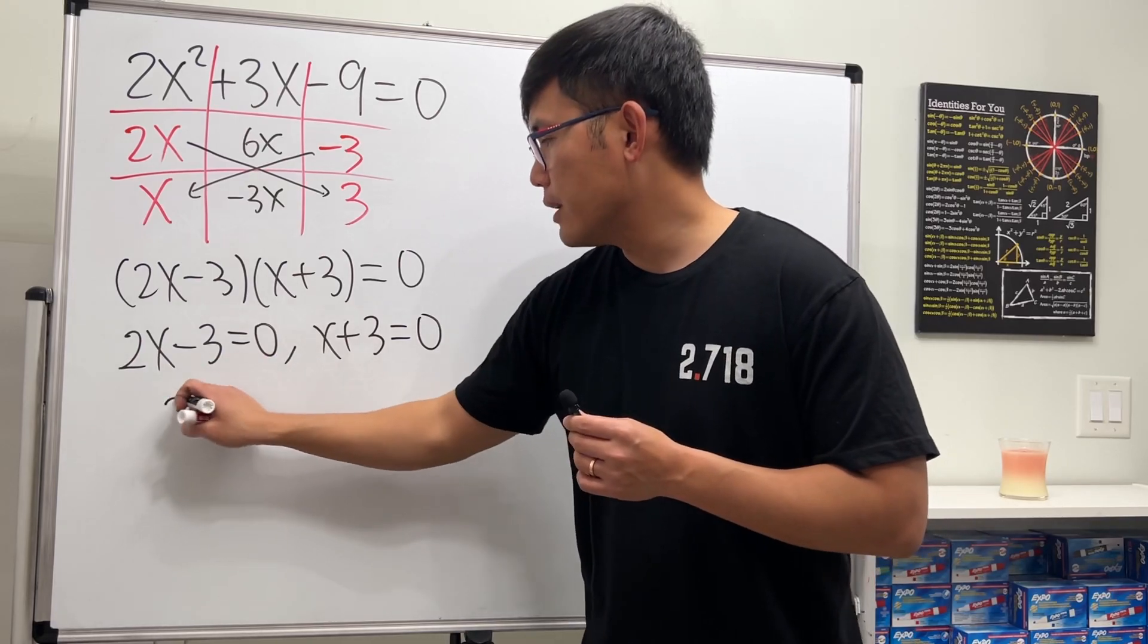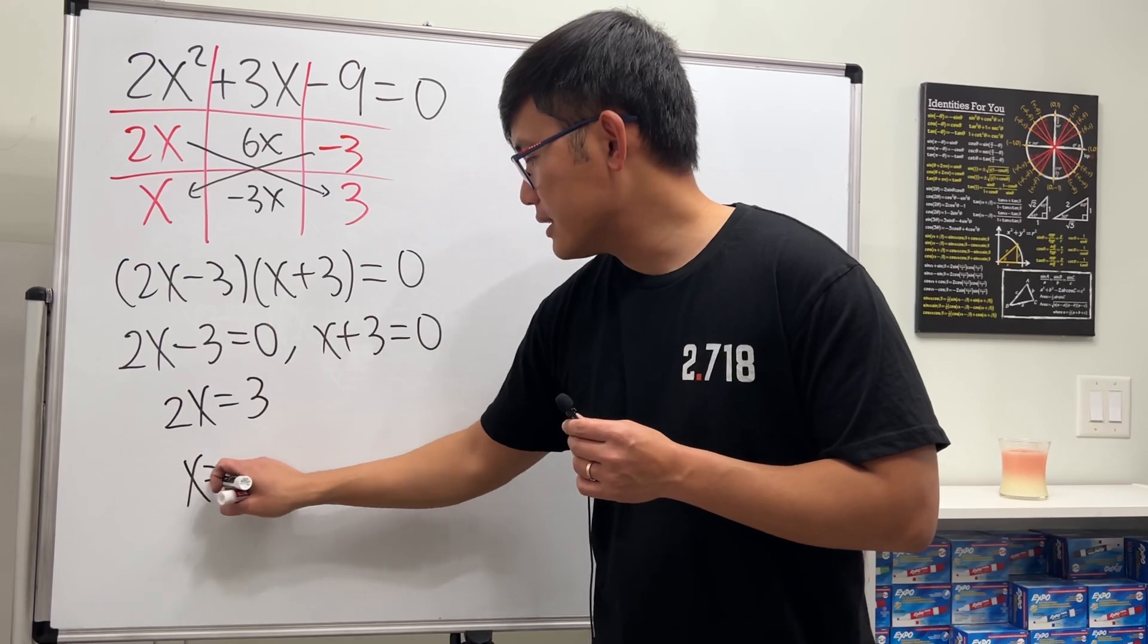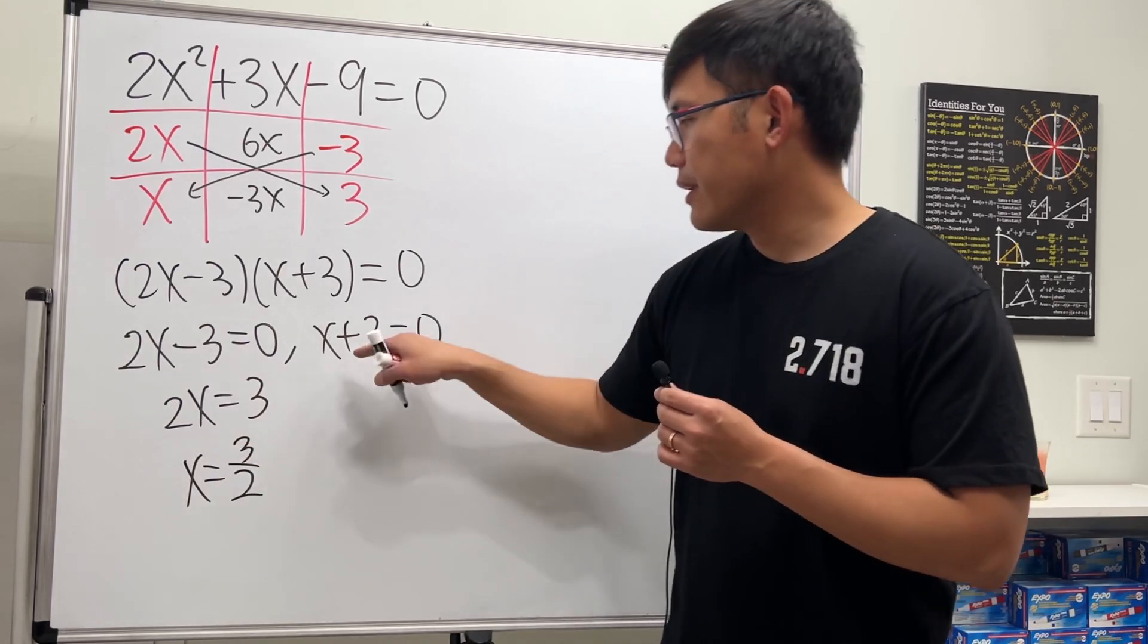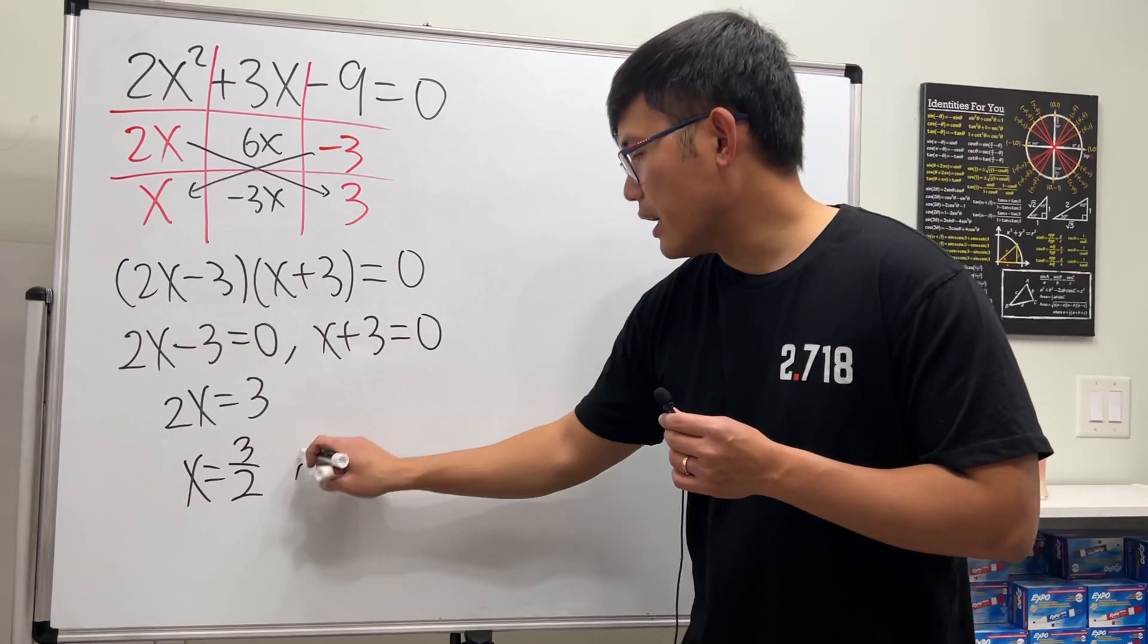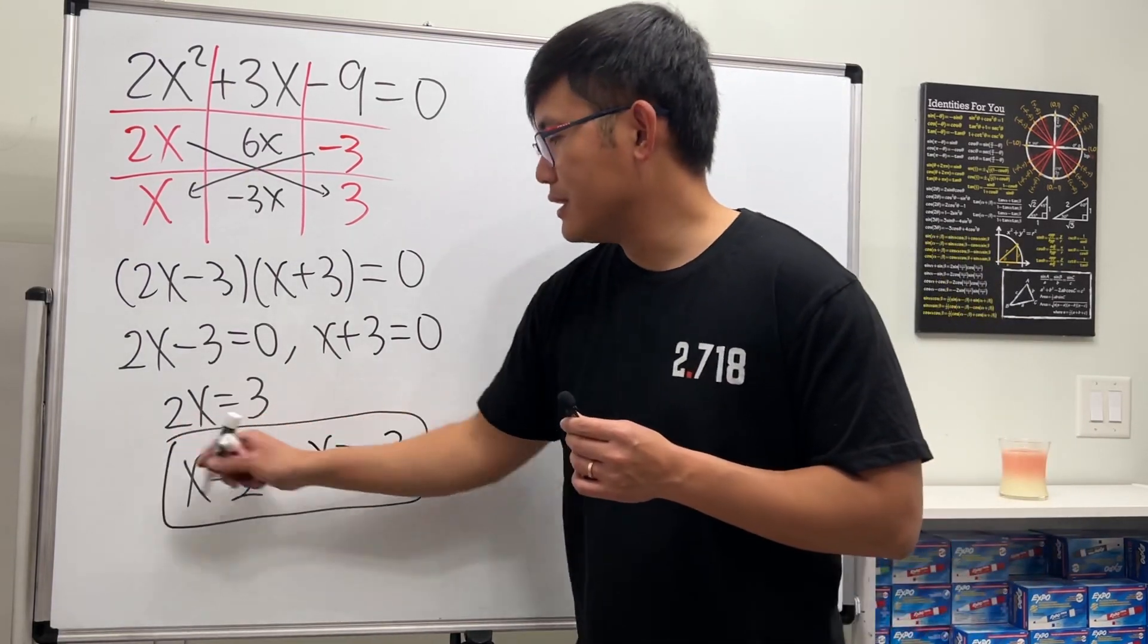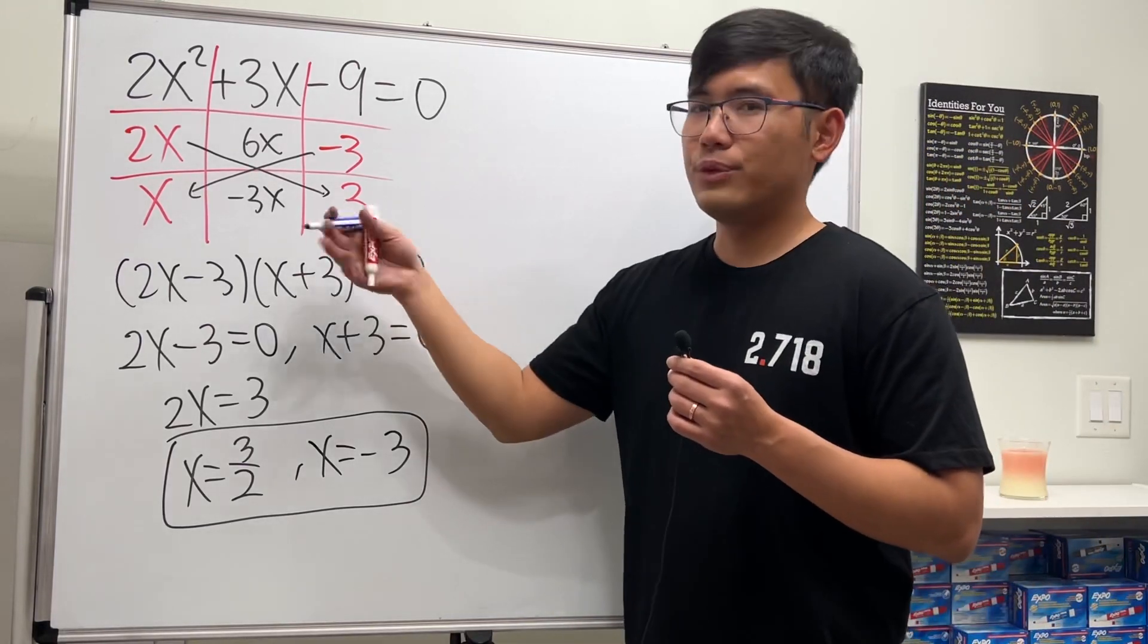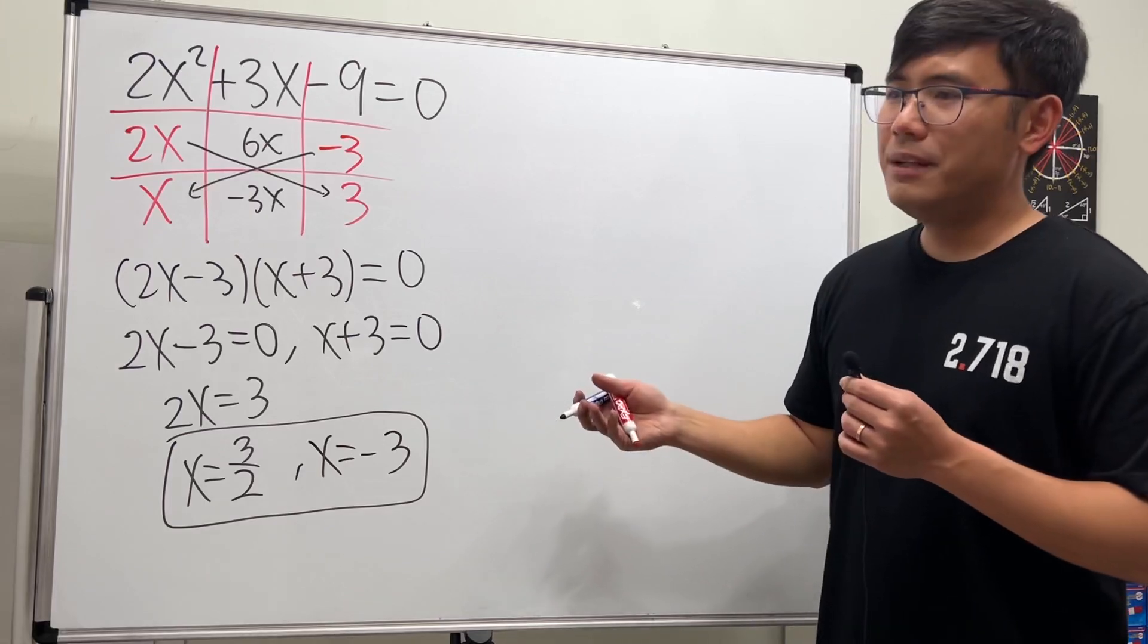Put the negative 3 to the other side, so 2x equals positive 3. Divide 2 on both sides, x equals 3 over 2. Then put this to the other side, we get x equals negative 3. With that we are done.